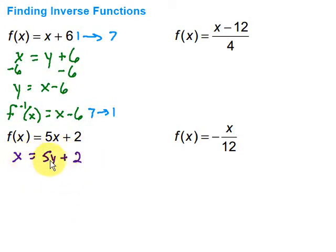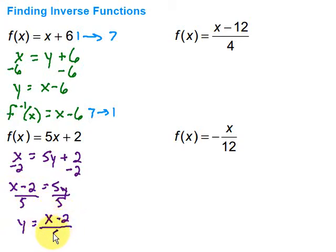So this becomes x equals 5y plus 2. Then I want to solve for y. So I'm going to go ahead and subtract 2. So now I have x minus 2 equals 5y. Then I divide by 5 on both sides. And now I have y equals, I just reverse the sides here, x minus 2 over 5. Write it in my inverse function notation. So f inverse of x is equal to x minus 2 over 5.